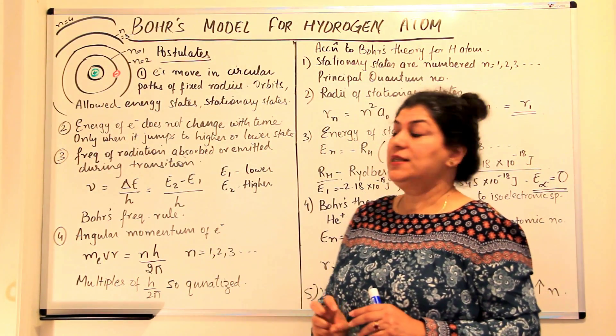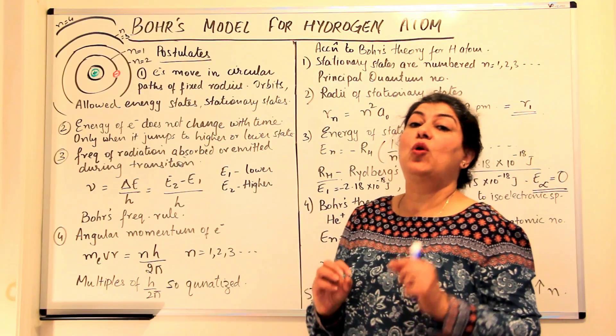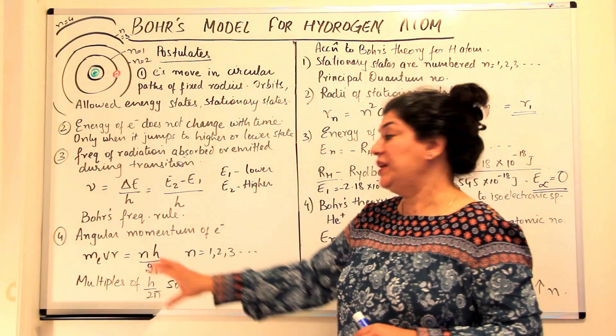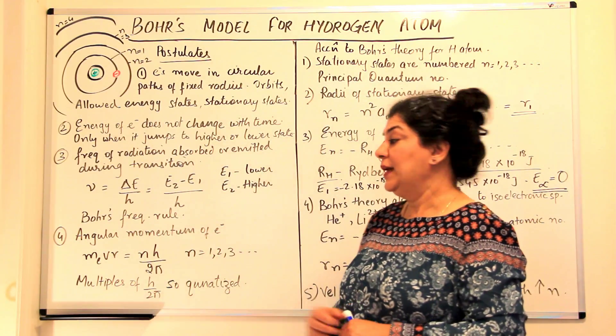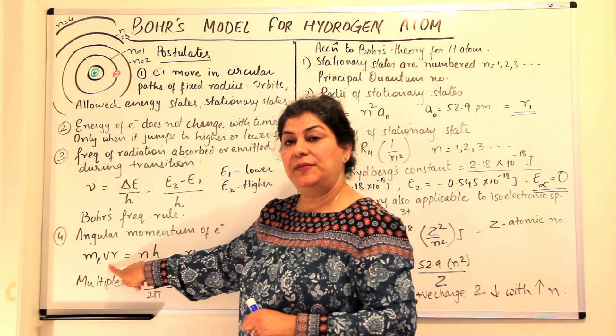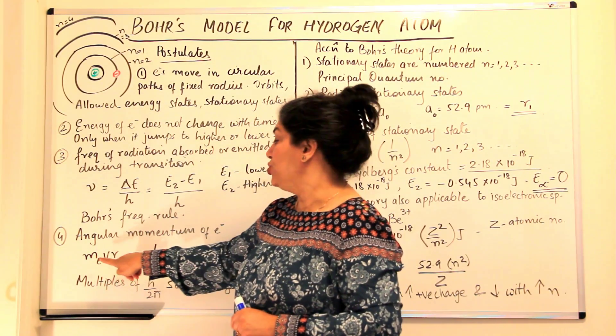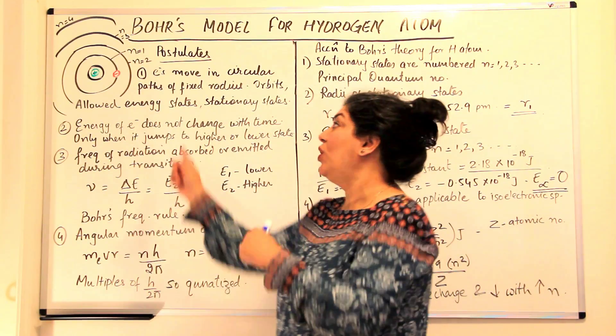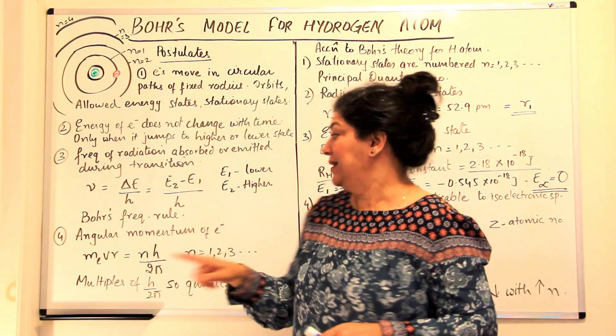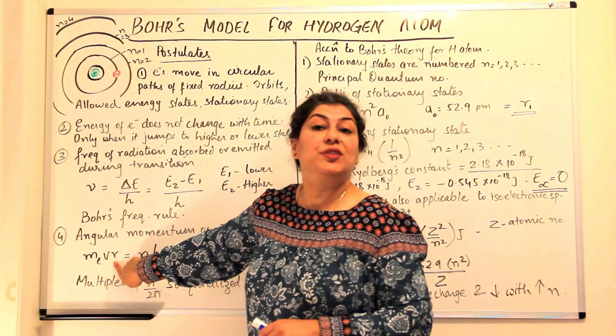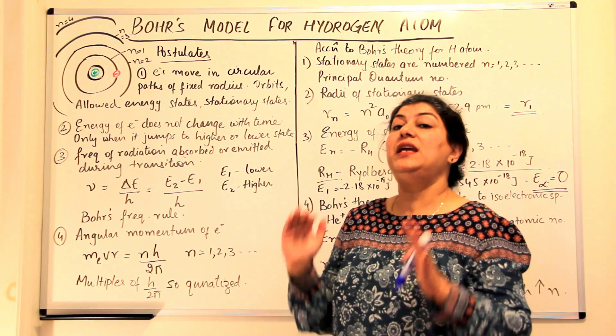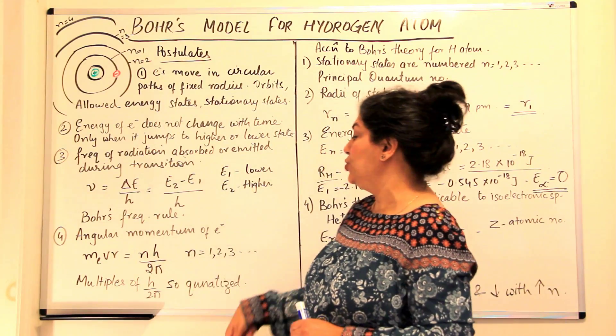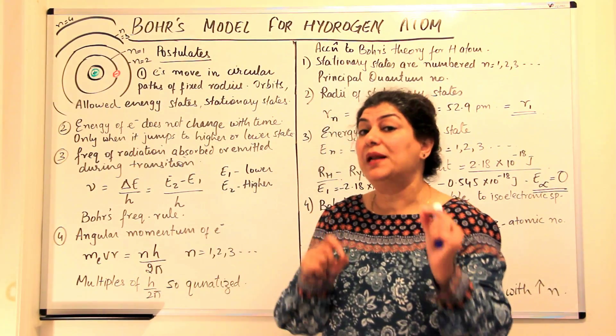The fourth postulate was that the angular momentum of an electron was also calculated by Bohr and he said that the angular momentum of an electron is given by this formula. Momentum we know is mass into velocity. So angular momentum would be mass into velocity, mass of an electron into velocity and since the electron is revolving in fixed orbits, in circular orbits, therefore we have to take into consideration the radius. So m v r is the angular momentum.